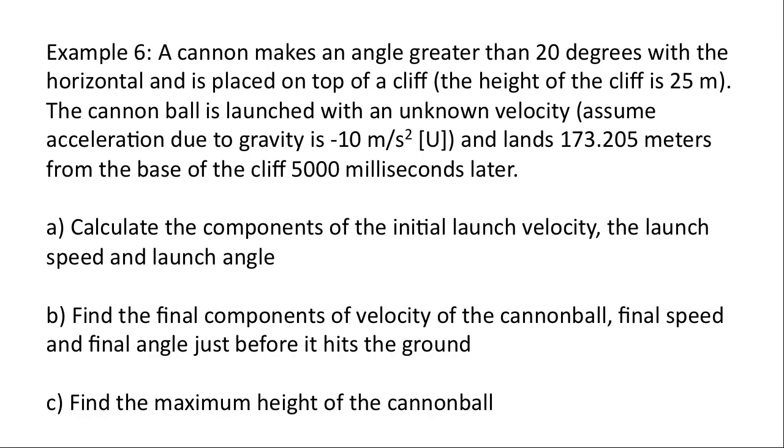And our final example today. A cannon makes an angle greater than 20 degrees with the horizontal and is placed on top of a cliff, which is 25 meters high. The cannonball is launched with an unknown velocity. We're going to assume the acceleration due to gravity is negative 10, not 9.8, just to simplify the math. And lands 173.205 meters from the base of the cliff, 5,000 milliseconds later. Calculate the components of the initial launch velocity, the launch speed, and launch angle. Let's focus on A.